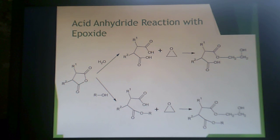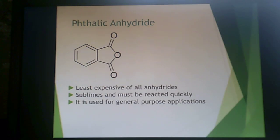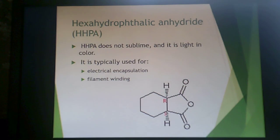Here's an example of an acid anhydride reaction with an epoxy. You add alcohol or water to open up the anhydride, which then opens up the epoxy ring, and then you propagate the reaction. Phthalic anhydride is an example of this type — it's the least expensive of all the anhydrides, but it sublimes, meaning it goes from solid to vapor and coats the sides of your reactor. So it has to be reacted quickly, and it's used for general-purpose applications.